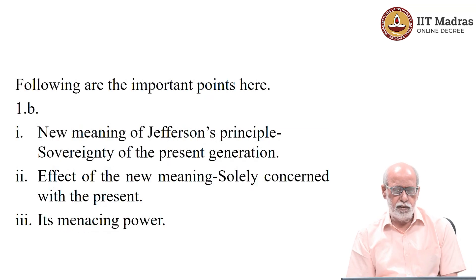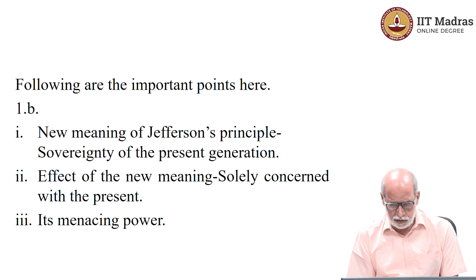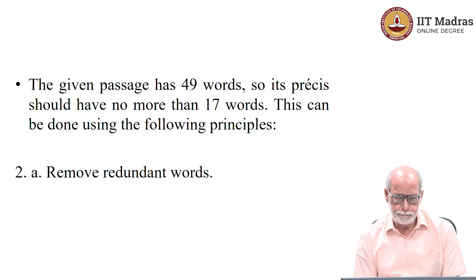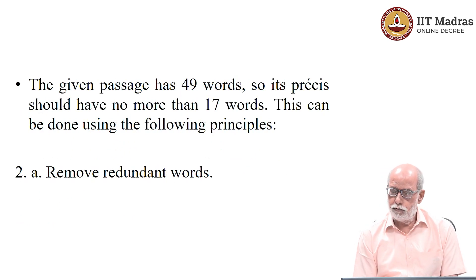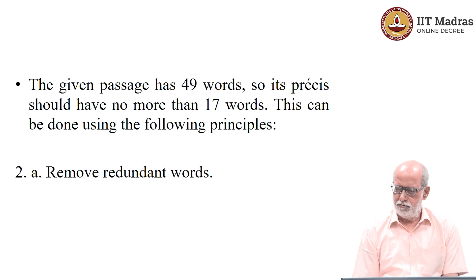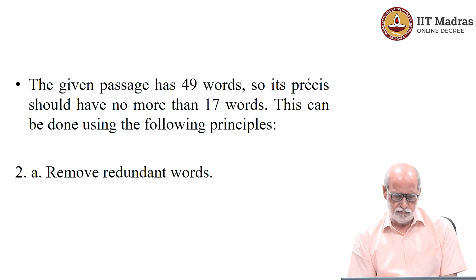Let's make the important points that come out of it. These are the points. Number one: sovereignty of the present generation. Number two: the present generation has become solely concerned with the present, and the menacing power of this concern. The given passage has about 49 words, and we have to rewrite that paragraph in about 16 or 17 words — ideally about 16 words, could be 17, could be 15, but no more, no less.